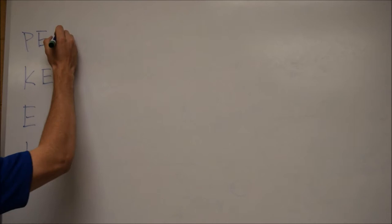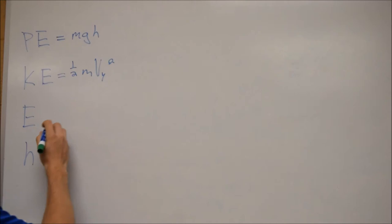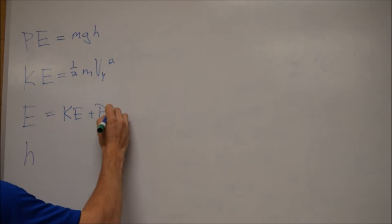So I'm going to go ahead and just write up the equations and then we'll move into the problem. So potential energy is just mass times gravity times the height. Kinetic energy is one-half mass times velocity of the y squared. Total energy is just kinetic energy plus potential energy, and then height is equal to energy over mass times gravity.